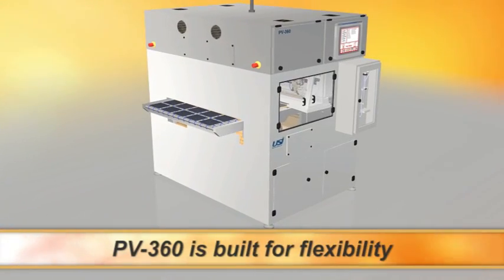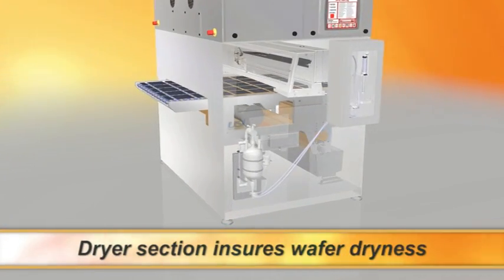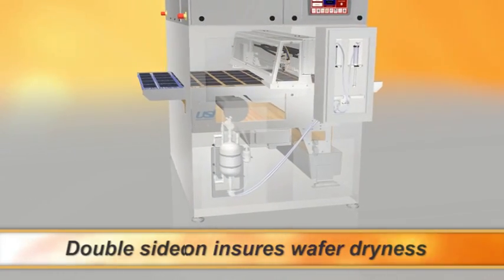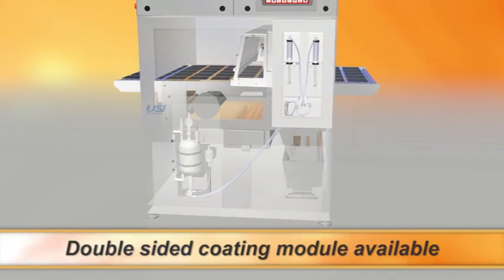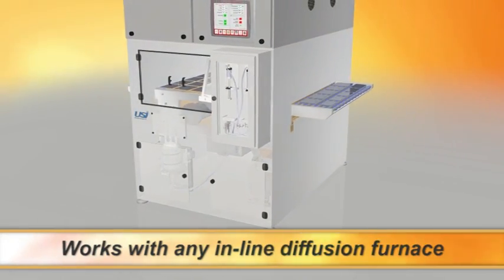The PV360 is built for flexibility. An optional dryer section helps dry wafers before they exit the unit. A module for double-sided wafer coating is also available, and the PV360 can work with any in-line diffusion furnace.